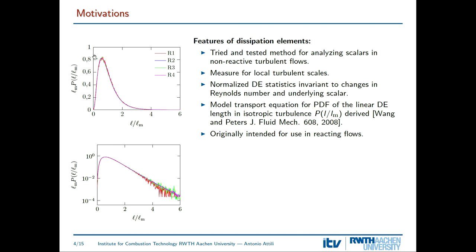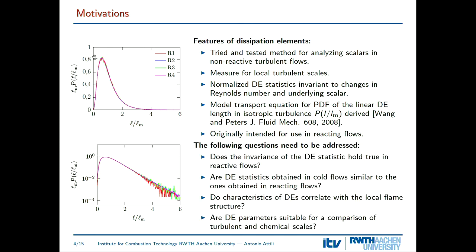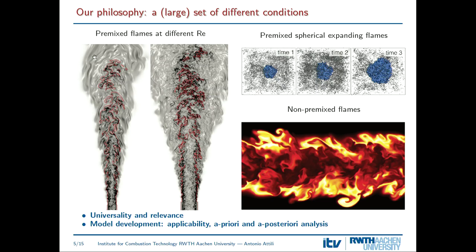The idea is to write transport equations or models for the PDF of these quantities, as done by Wang and Peters, and then use them as models for reactive flows. But first we need to analyze flames with this method. A number of questions arise: Does the invariance seen in HIT also hold in reactive flows? Can we find correlations between entries of the PDF and the local structure of the flame? And can we use dissipation elements to measure the relative activity of turbulence versus chemistry, which is the main driver of turbulence-chemistry interaction?